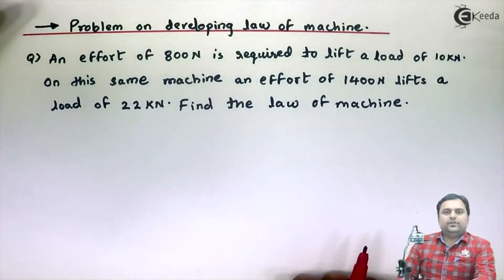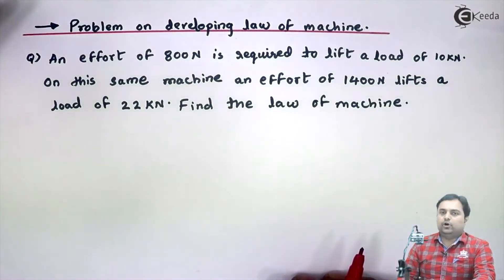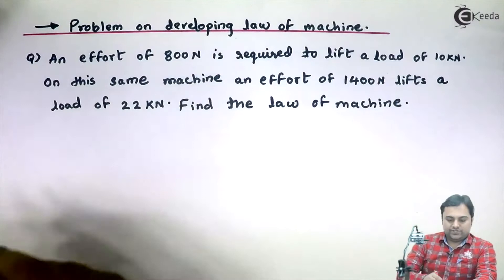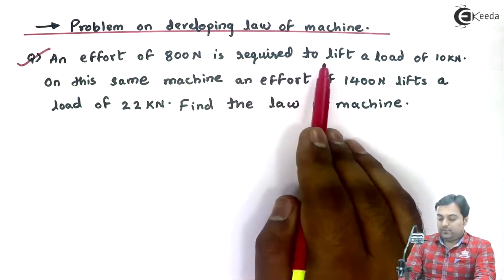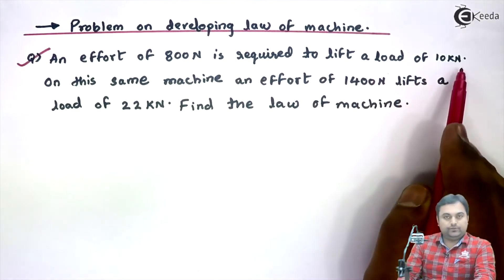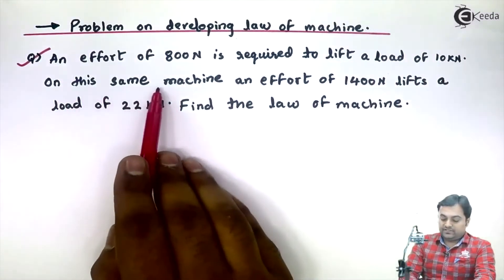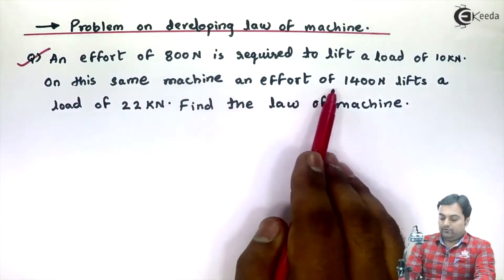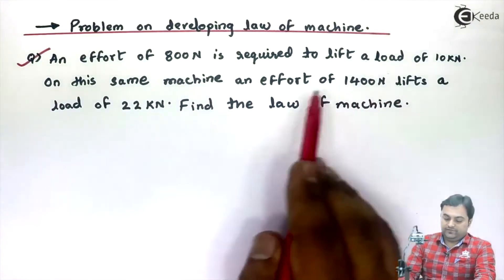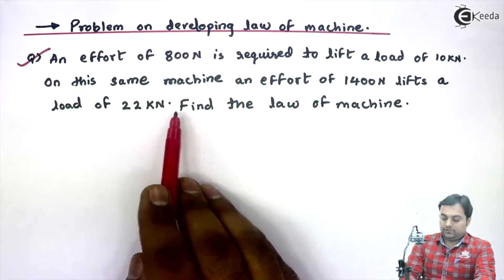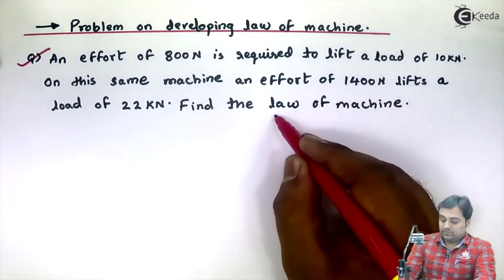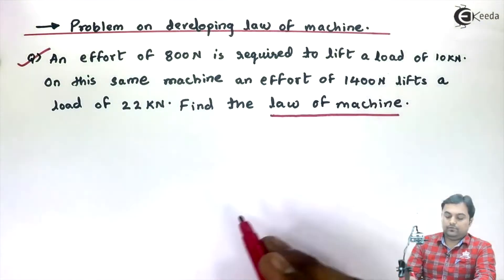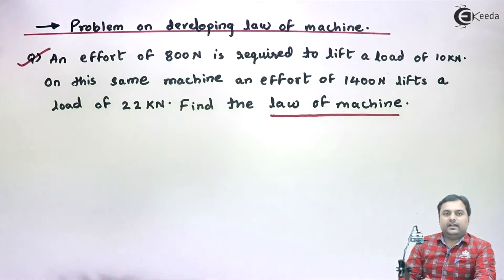Hello friends. In this video I will take a problem in which we will be developing the law of machine. Here is the question: an effort of 800 Newton is required to lift a load of 10 kilonewton. On this same machine an effort of 1400 Newton lifts a load of 22 kilonewton. Find the law of machine.